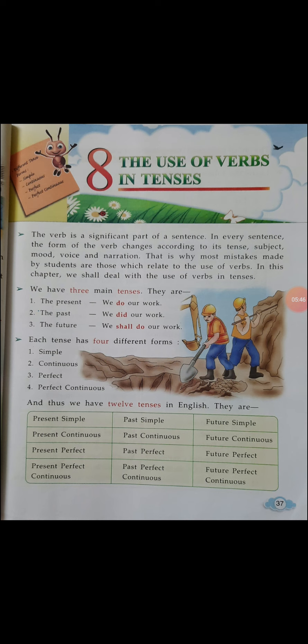Each tense has four different forms: simple, continuous, perfect, and perfect continuous. You have to remember these four forms of each tense.